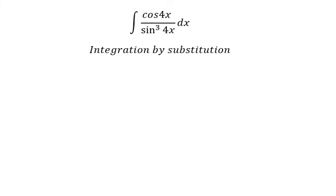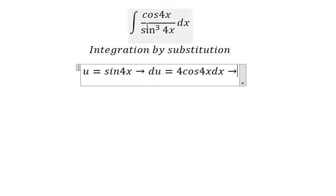So I will put u equal to sin 4x. So if we do the first derivative for both sides, we have du equal to 4 cos 4x dx. Because we don't have number 4 in here, so we divide both sides by number 4.